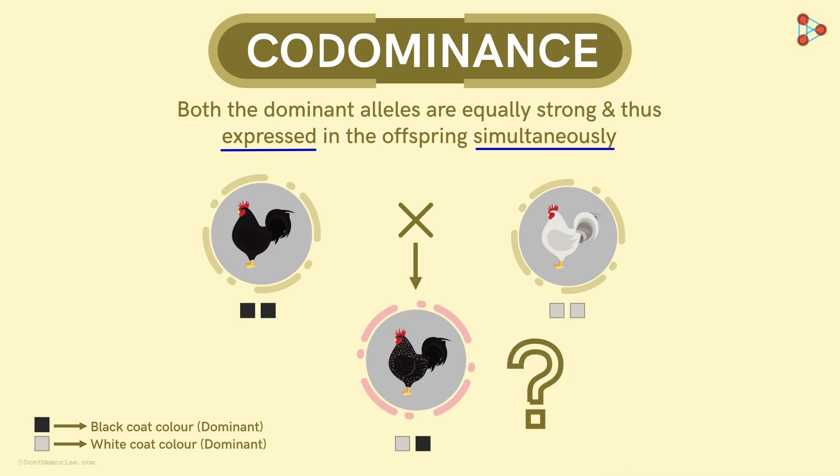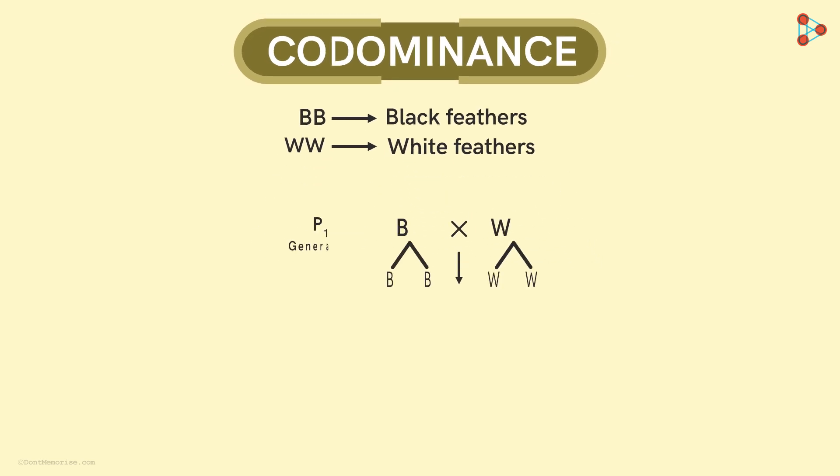How do you think we got this chicken with checkered feathers? In such a case, we cross a black feathered chicken with a white feathered one. To understand this theoretically, let's say that we have the genes BB in capital for black coloured feathers and WW in capital for white coloured feathers. On crossing the two, we get a progeny with all heterozygous genotypes. Each offspring has one B and one W allele. That means each chicken has both the dominant alleles. And both the dominant alleles try to express themselves.